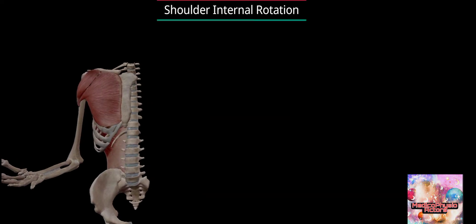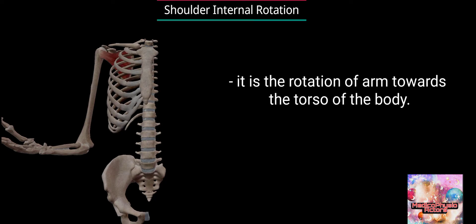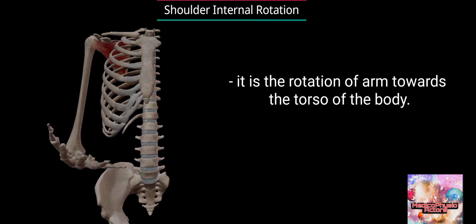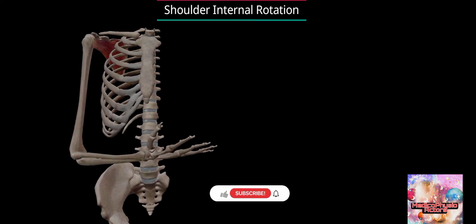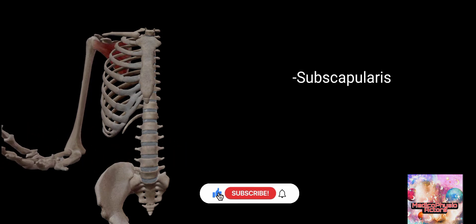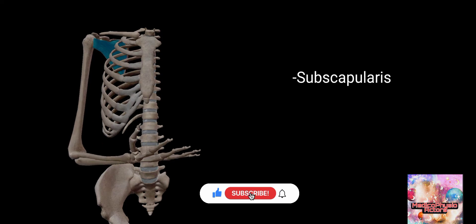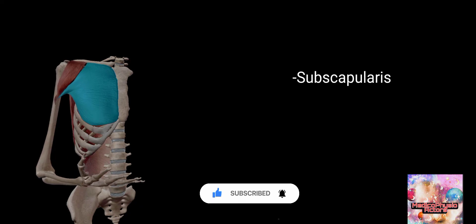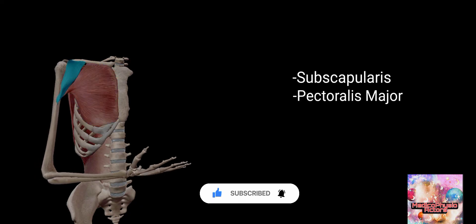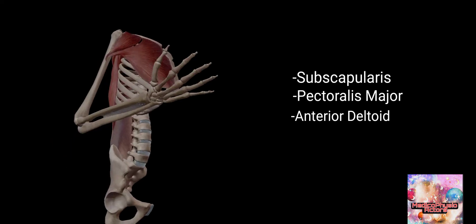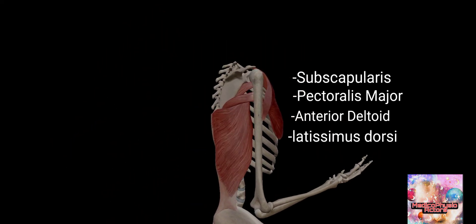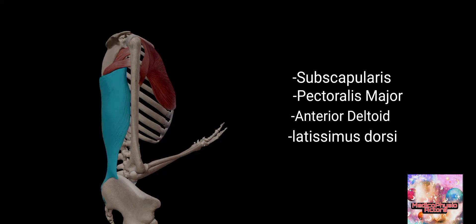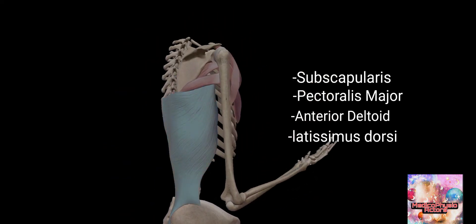Shoulder internal rotation is the rotation of the arm towards the torso. The main internal rotator is the subscapularis. Other muscles acting synergistically are pectoralis major, anterior deltoid, latissimus dorsi, and teres major.